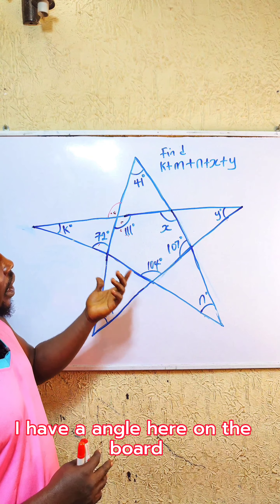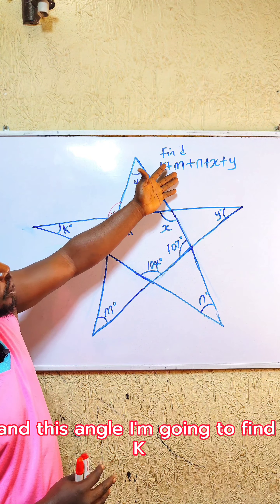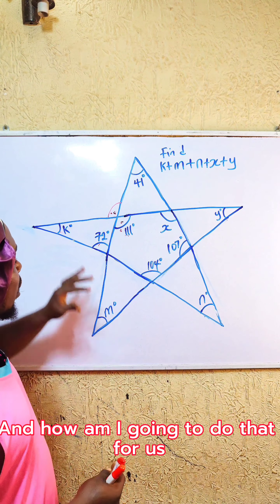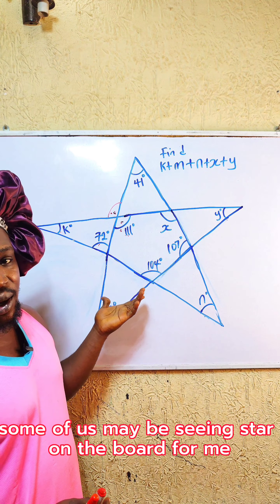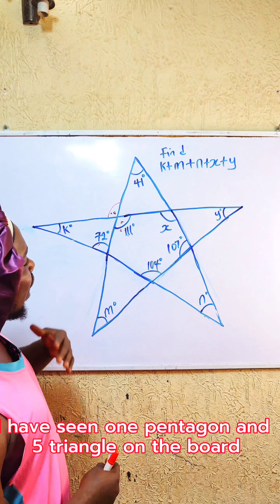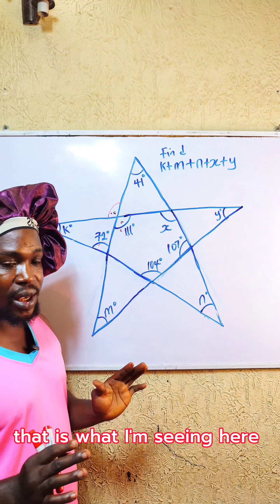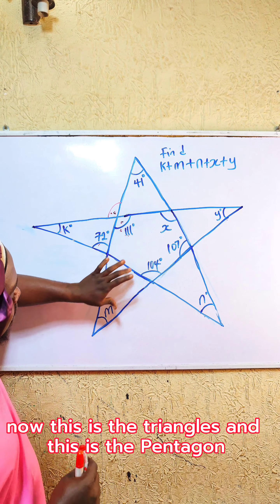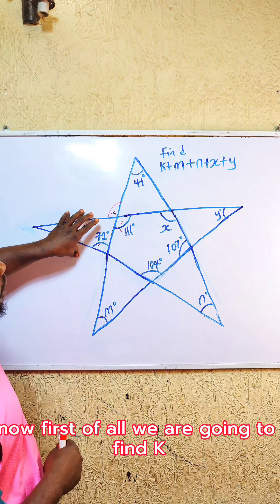Now look at this: I have an angle here on the board, and I'm going to find k plus m plus n plus s plus y. How am I going to do that? Some of us may be seeing a star on the board, but I am seeing one pentagon and five triangles on the board. These are the triangles and this is the pentagon.